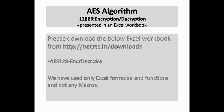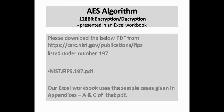Our approach is to learn by practicing. We recommend that you download AES-128-ENCR-DECR.XLSX from the link given in the description. In that Excel workbook, we use formulae and functions that are part of MS Excel and not our own macros. Please also download nist.fips.197.pdf from csrc.nist.gov/publication/FIPS listed under number 197. Our Excel workbook uses the sample case given in appendices A and C of that document, making it easier to follow our workings and validate results.